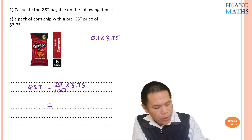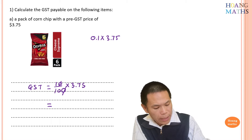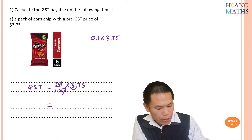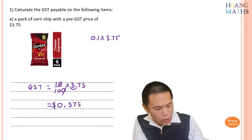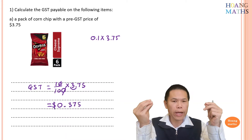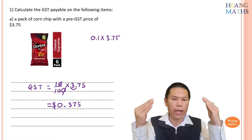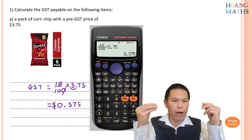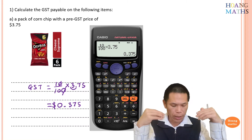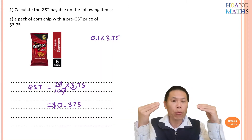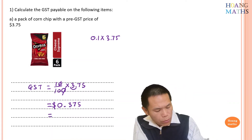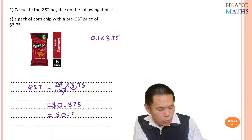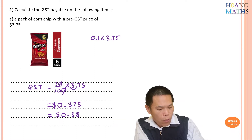To work this out, I cancel and divide by 10, which makes the number smaller — moving the decimal point gives 0.375 dollars. Because it's money, we write to two decimal places, so the GST is $0.38, or 38 cents. You can also just use your calculator: 10 over 100 times 3.75.